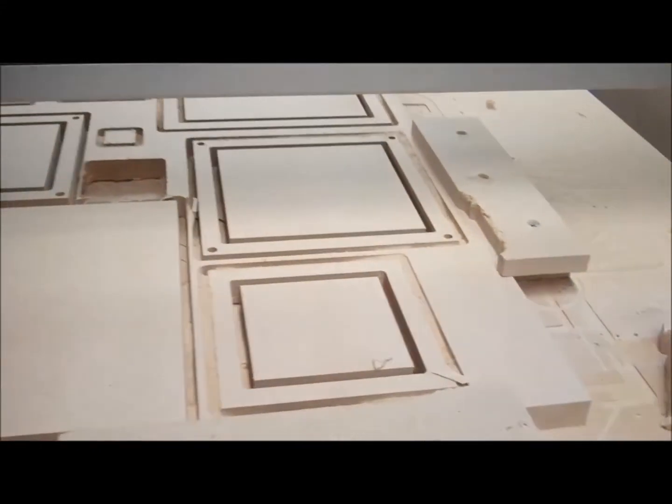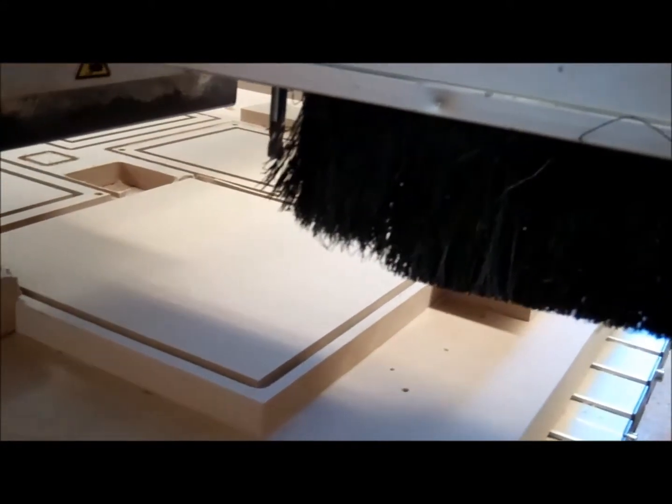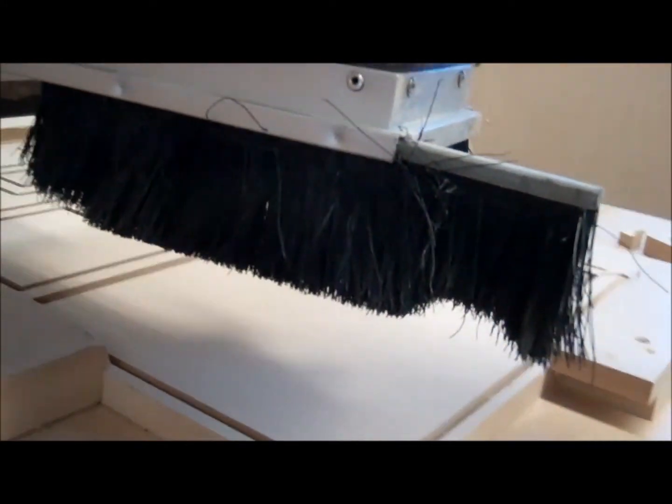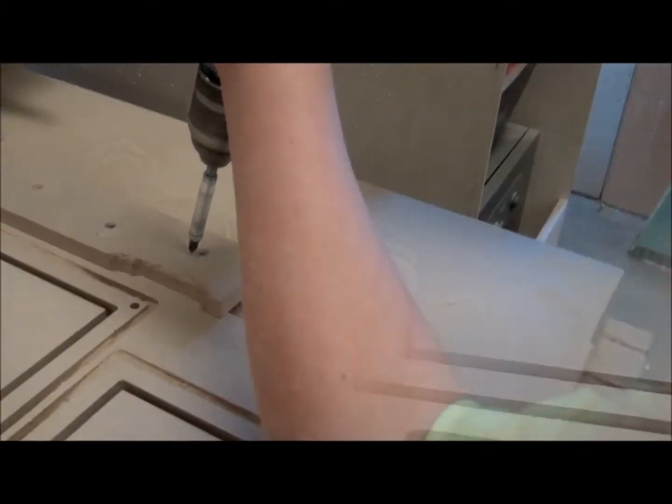Alright, it's all done running. So go ahead and bring the CNC up in the Z axis and then all the way back. Then Ryan, go ahead and grab the drill driver and start unscrewing the lock blocks. And they're all the parts.